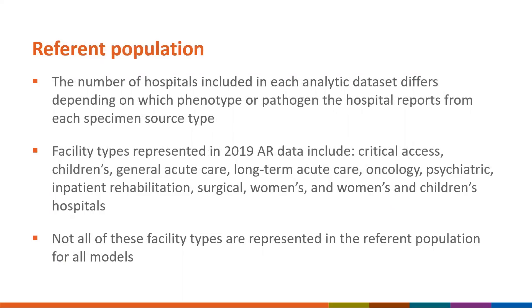The number of hospitals included in each analytic data set differed depending on which phenotype or pathogen the hospital reported for each specimen source type. Facility types represented in 2019 AR data included critical access, children's, general acute care, long-term acute care, oncology, psychiatric, inpatient rehabilitation, surgical, women's, and women's and children's hospitals. Not all facility types were represented in the reference population for all models, as more rare phenotypes with fewer facilities reporting may only have had a few facility types represented.